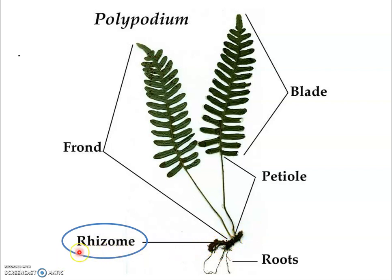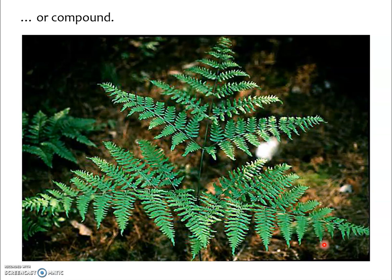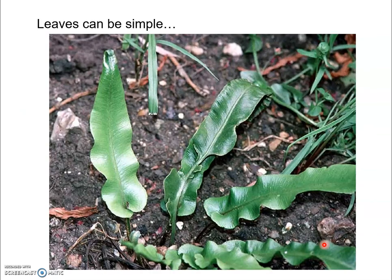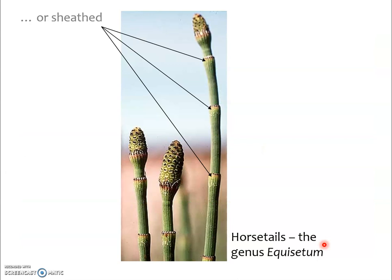What you think of when you think of a fern is actually just the leaves; the stem runs laterally under the ground, and we call that stem a rhizome. We think of compound leaves in ferns, though sometimes the leaves are simple — meaning they don't have lots of dissection. In Equisetum, we have megaphylls, but they're sheathed around the stem, so they definitely look a little different.